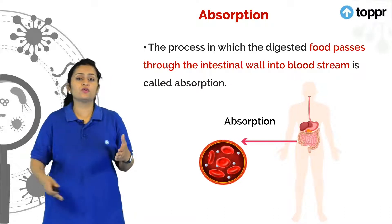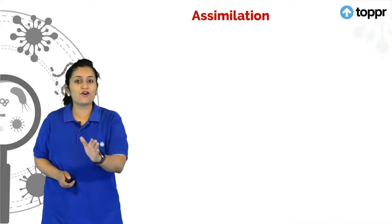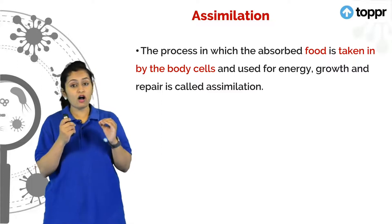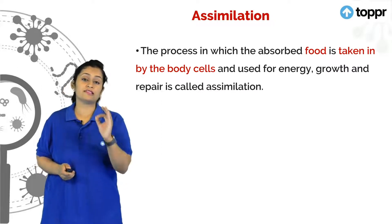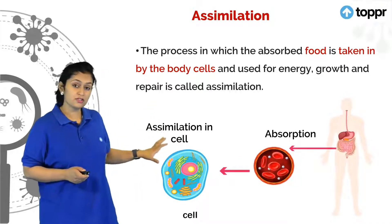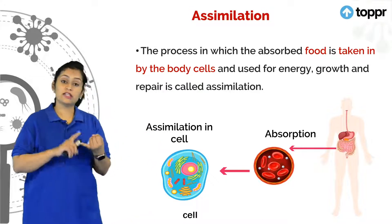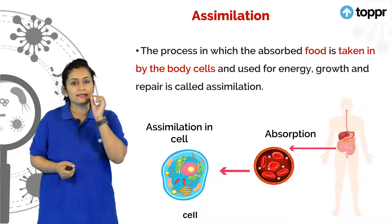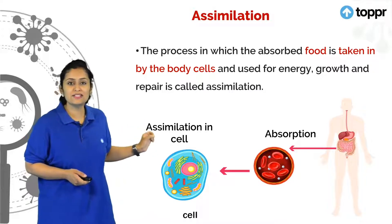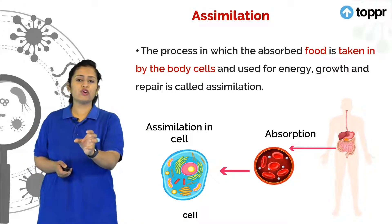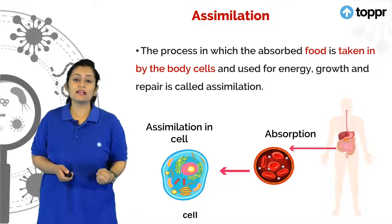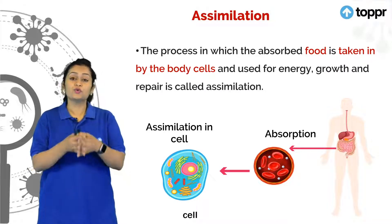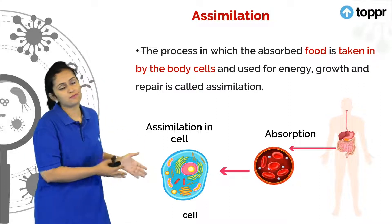The blood can carry this food to all our cells throughout the body, and that is what is called assimilation. The blood carries all the food absorbed from the intestinal wall and supplies it to each and every cell in our body. In those cells, we are generating energy, using it for repair, maintenance and even for cell division. So assimilation is the process in which absorbed food is taken by the bloodstream to the cells and utilised for energy production, repair and maintenance.